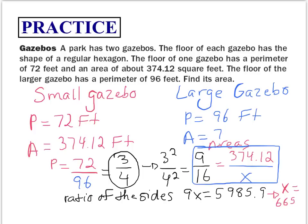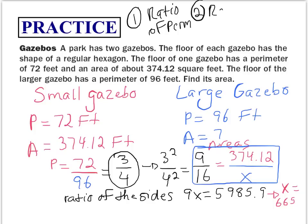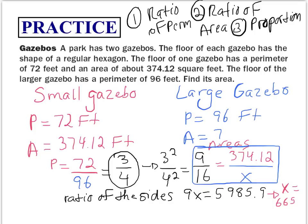Let's quickly recap what we did in this problem. The first thing we did was find the ratio of the perimeters. Once we found that, we could find the ratio of the areas. And once we did that, we wrote a proportion to solve for the large area. That's the end of this video. Thank you and take care.